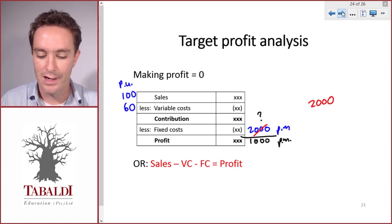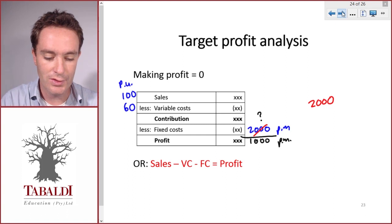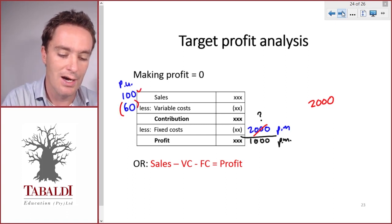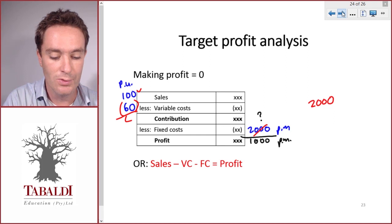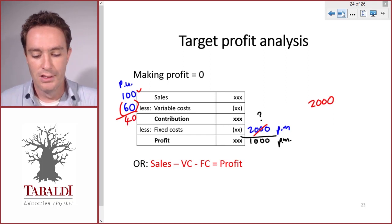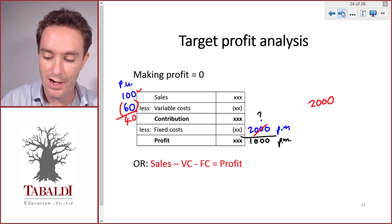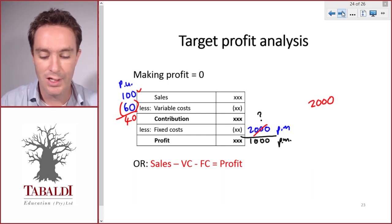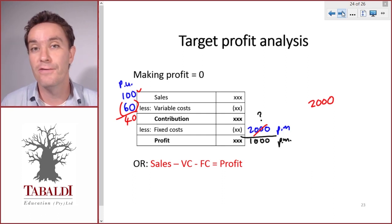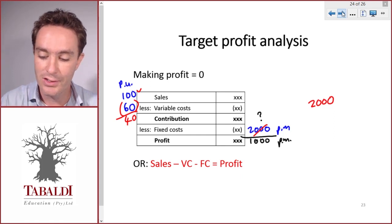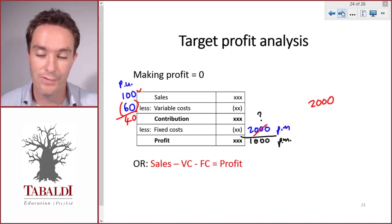Now how much does each unit contribute? It's our selling price per unit less our variable cost per unit, which equals $40. So each unit contributes $40 and we need to cover our fixed cost of $2,000 in order to break even. So how many 40s do we require? We divide the $2,000 fixed cost by the $40 contribution per unit.